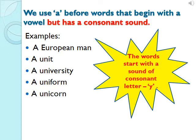Similarly, we put article A when the word starts with a vowel but has a consonant sound, like: a European man, a unit, a university, a uniform, a unicorn. These words start with a sound of the letter Y, i.e., 'you.' Since Y is a consonant, we put article A before them.